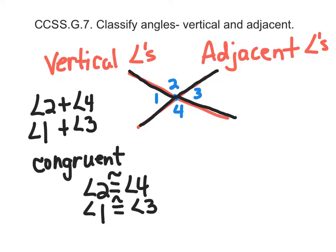If we're looking at adjacent, they're still with intersecting lines, but they are neighbor angles. So angle 2 is adjacent to angle 3.